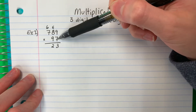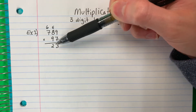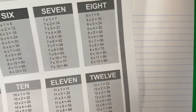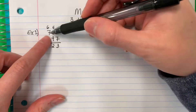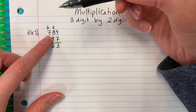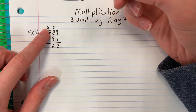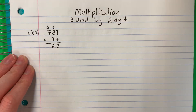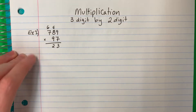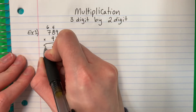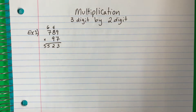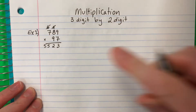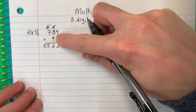Now we're going to do seven times seven. Siete por siete. Seven times seven is 49. Cuarenta y nueve. Plus six, más seis. So 49 plus six is 55. Cuarenta y nueve más seis es cincuenta y cinco. We're going to go ahead and put the 55 there. So we're done with this. Terminamos con esto. Y terminamos con este.